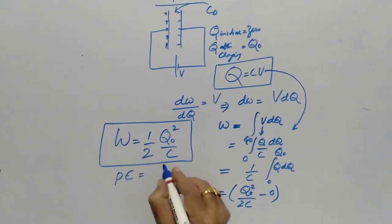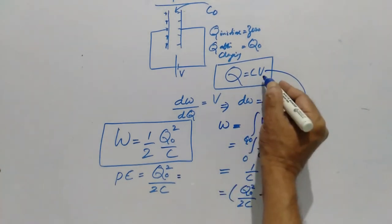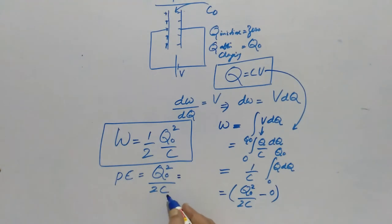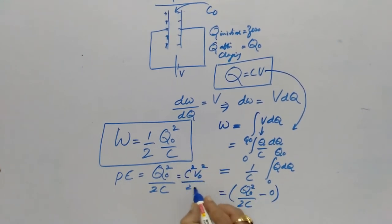Energy stored in a capacitor can be written as Q₀²/2C. Now I can conveniently write: my Q₀ is nothing but C₀V₀. So if I replace Q₀² as C²V₀² by 2C, I will get ½. One C will be cancelled here. Half CV₀².